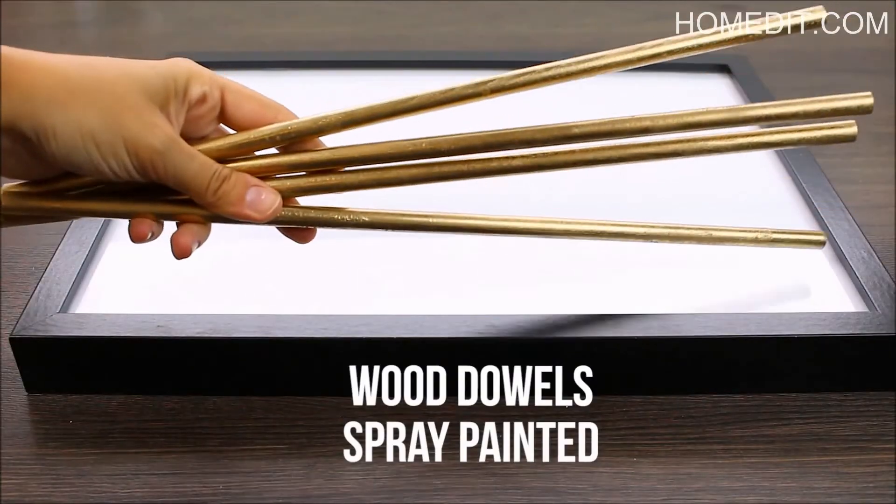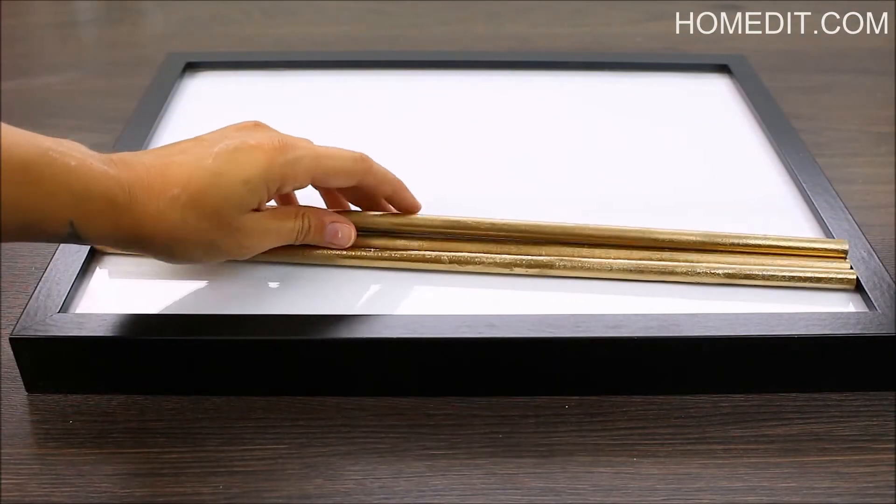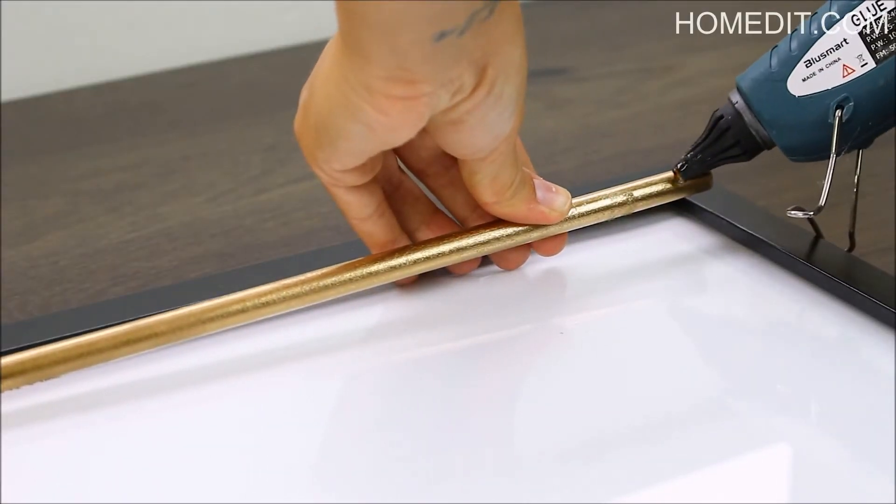Now take four wooden dowels that you have painted in your desired color and glue them to the glass at the ends, making sure that they fit snugly within the frame.